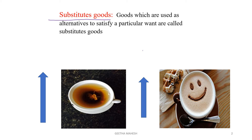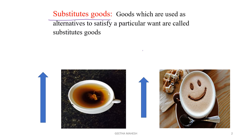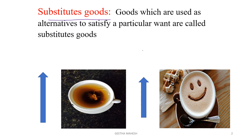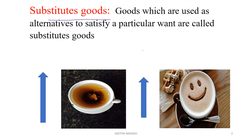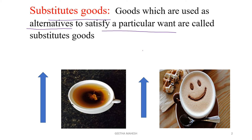Substitute goods are those goods which are used as alternatives to satisfy a particular want. That means your goods can be used as a substitute to satisfy a particular want. A good example for substitute goods are tea and coffee.